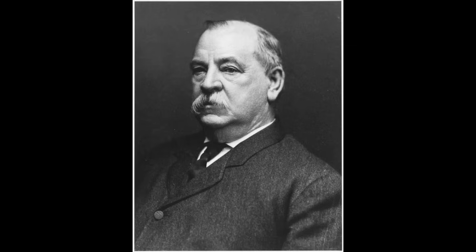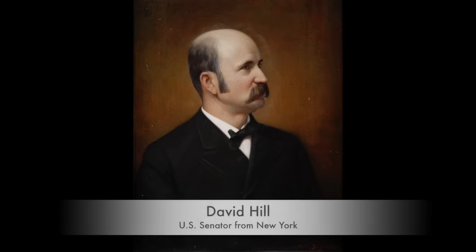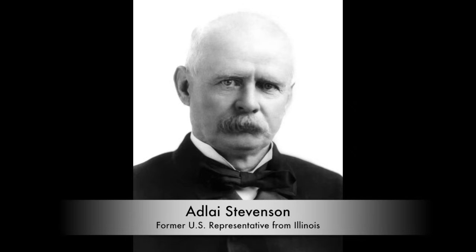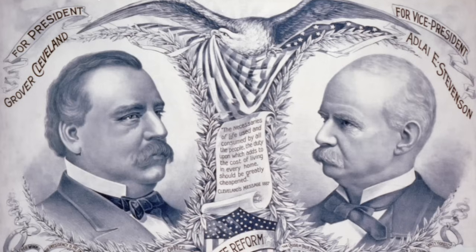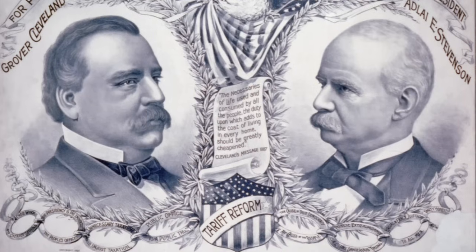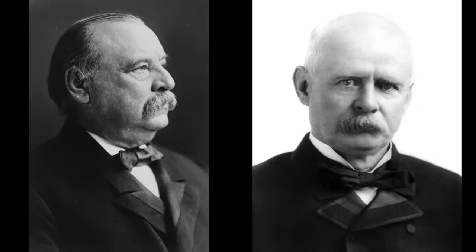Grover's back. After winning the popular vote but losing the electoral vote in 1888, Grover Cleveland was back with a vengeance in 1892. While many were ready for a return to his policies, he did face opponents like David Hill, the senator and former governor of New York. Cleveland survived to become the first Democrat nominated a third time to run for president. The Democrats nominated Adlai Stevenson, a former U.S. representative from Illinois, for vice president. Stevenson was an interesting choice because he favored greenbacks and free silver to inflate the currency, while Cleveland was a gold standard guy who didn't like just printing money. Cleveland was cool with Stevenson being on the ticket, though, as it provided some balance.